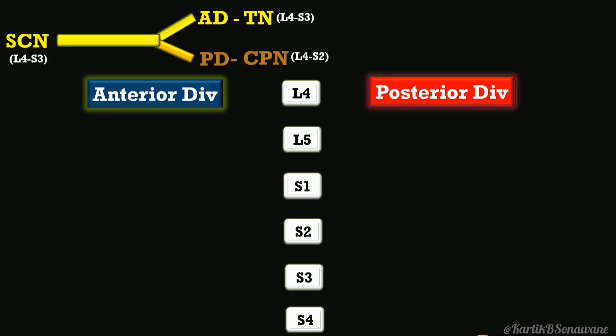Always remember: in the sacral plexus, branches from the anterior division always include the last contributing root. So in the case of the sciatic nerve with root value L4 to S3, the last root S3 is always included in the tibial nerve but excluded from the common peroneal nerve, which has root value L4 to S2.